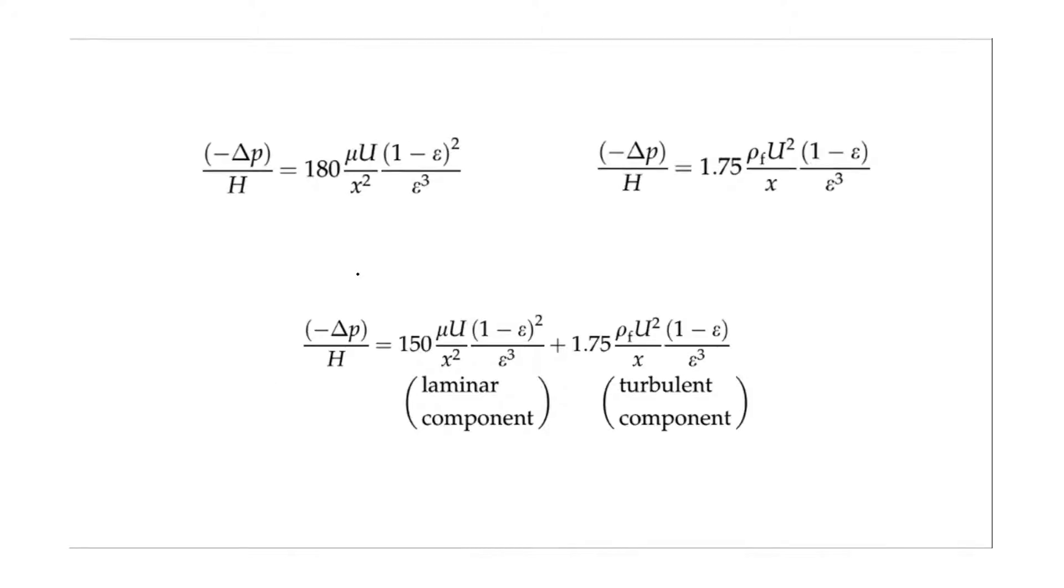These three equations here describe how the pressure drops through a packed bed based on the height of the packed bed. The first one that we're going to look at is this equation here. This equation demonstrates laminar flow through a packed bed. As seen, laminar flow is mainly based off of the void fraction which is epsilon here and also a main component of the viscosity seen here.